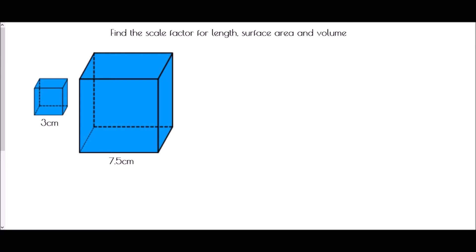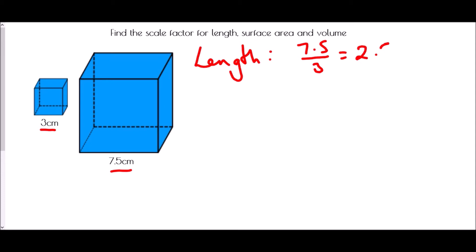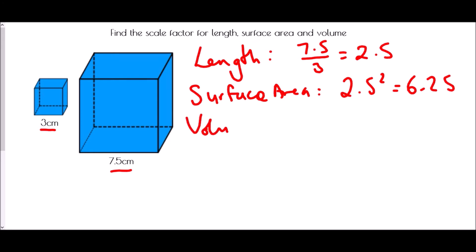And the last one — we have a cube with a length of 3 centimetres and a cube with a length of 7.5. So I compare the two lengths: 7.5 over 3 equals 2.5. The surface area scale factor is the linear squared, so 2.5 squared equals 6.25. The volume scale factor is the linear scale factor of 2.5 cubed, which is 15.625. The scale factors can be fractions and decimals — that is absolutely fine.